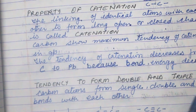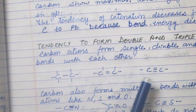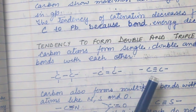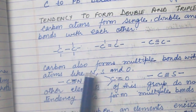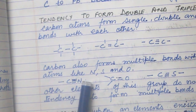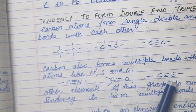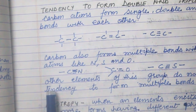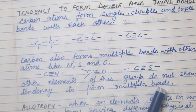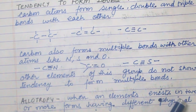Carbon atoms form single, double, and triple bonds with each other, such as in alkene and alkyne structures. Carbon also forms multiple bonds with other atoms like nitrogen, sulfur, and oxygen. Other elements of this group do not show a tendency to form multiple bonds.